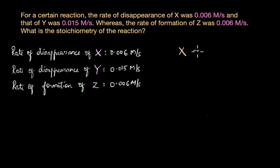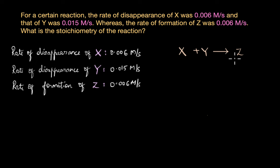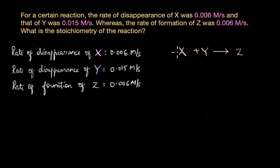We have the rate of disappearance of X, disappearance of Y, and formation of Z. From this, the reaction should be something like X and Y forming Z. We know that stoichiometry is related to the rates at which reactants disappear and products are formed. Since the rate of disappearance of X equals the rate of formation of Z, their stoichiometric coefficients are likely in a 1:1 ratio.